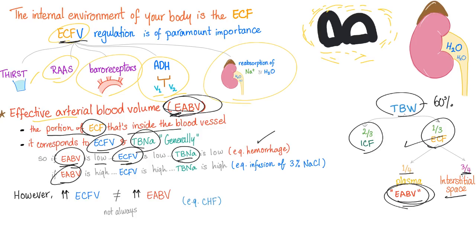On the other hand, if effective arterial blood volume is high, you can deduce that extracellular fluid volume is high and total body sodium is high. Example: infusion of a 3% saline — 3% salt solution. They are infusing more salt than water, so total sodium is going to be high, extracellular fluid volume is going to be high, and the effective arterial blood volume is going to be high.